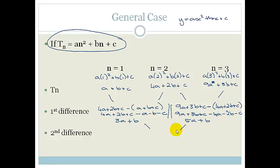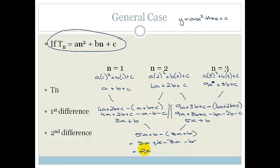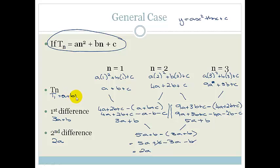To get the second difference, we subtract these two first differences: (5a plus b) minus (3a plus b), which becomes 5a plus b minus 3a minus b. The b's cancel and we're left with 2a. So the second difference is always equal to 2a. The first difference is always 3a plus b, and the first term t1 is always equal to a plus b plus c.